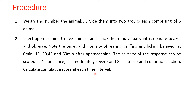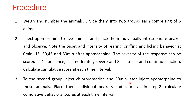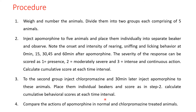Calculate the cumulative score at each time interval. Give apomorphine and check rearing, sniffing, and licking behavior at intervals of 0, 15, 30, 45, and 60 minutes, scoring as 1 for presence, 2 for moderately severe behavior, and 3 for intense and continuous action. For the second group, inject chlorpromazine and 30 minutes later inject apomorphine. Place them in individual beakers and score as in step 2. Calculate the cumulative behavior score at each time interval and compare the action of apomorphine in normal and chlorpromazine-treated animals.